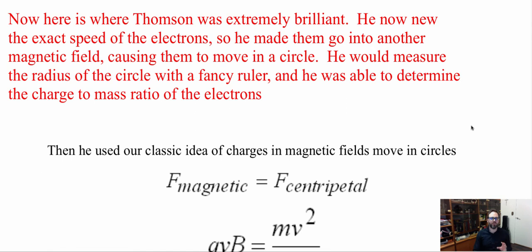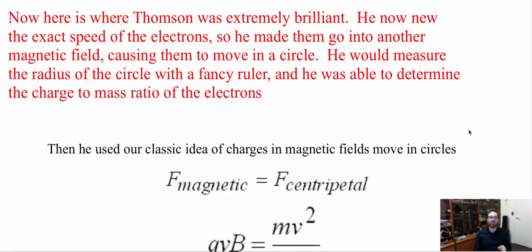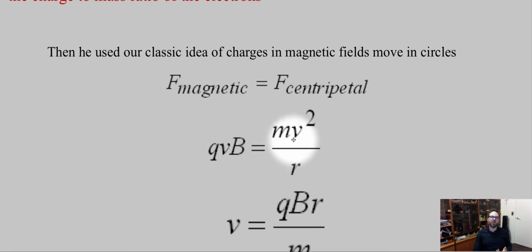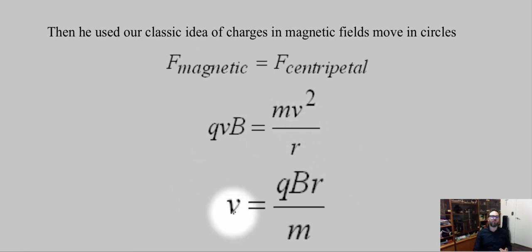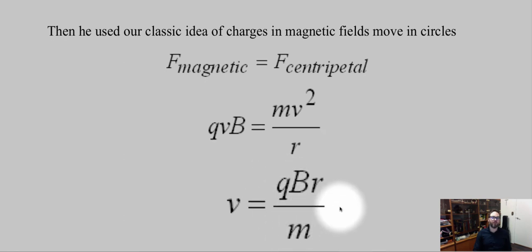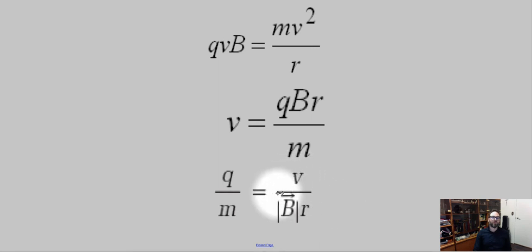This is where Thomson is really brilliant. Once he figured out the velocity of the electrons, he made them go into another magnetic field, causing them to move in a circle. He measured the radius of that circle and was able to determine the charge-to-mass ratio of the electron. He set the magnetic force equal to the centripetal force: q·v·B = m·v²/r. Rearranging gives velocity = q·B·r/m. Isolating the charge-to-mass ratio gives: q/m = v / (B·r).